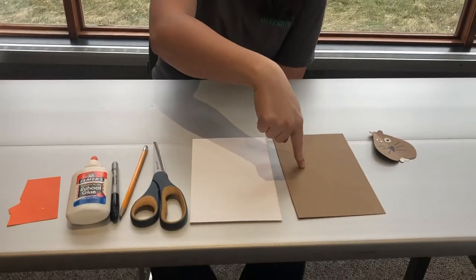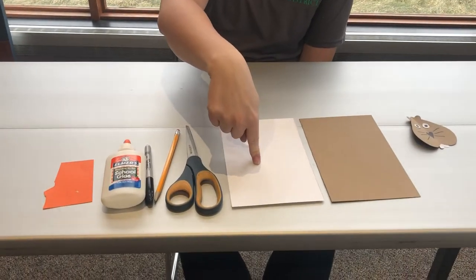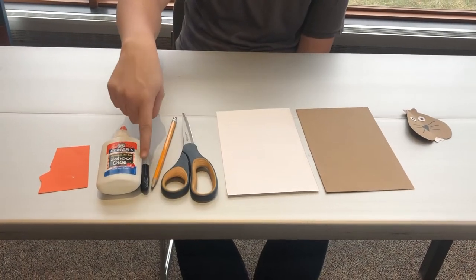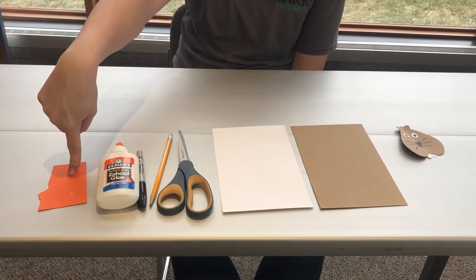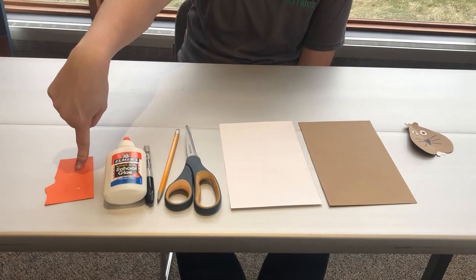For this you need half a piece of brown paper, half a white paper, scissors, a pencil, a sharpie, a bottle of glue, and a scrap piece of paper so you don't get glue on your table.